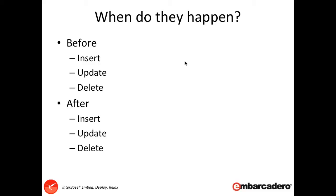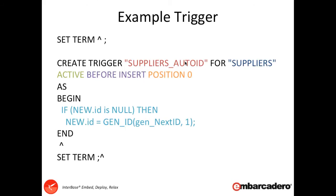Whilst a trigger runs, you can find out what the current and new value is by using the new dot and after dot prefix for the fields. So if we look at an example trigger here, we can see in the light blue in the middle we're using new dot ID to find the new value for the ID field. Now if this was an after update trigger, we could use old dot ID and new dot ID to compare differences between the previous and the current state of the record.